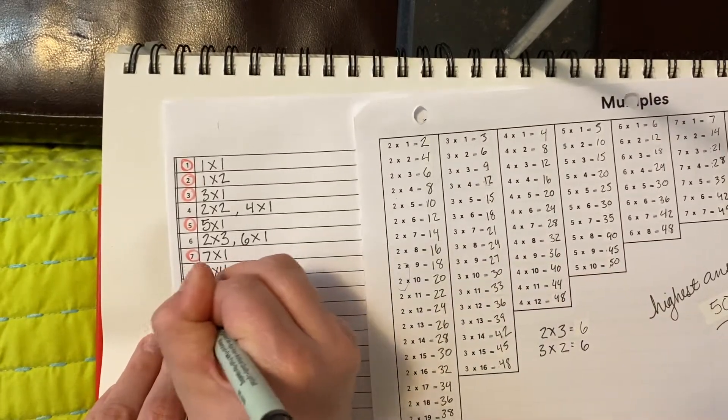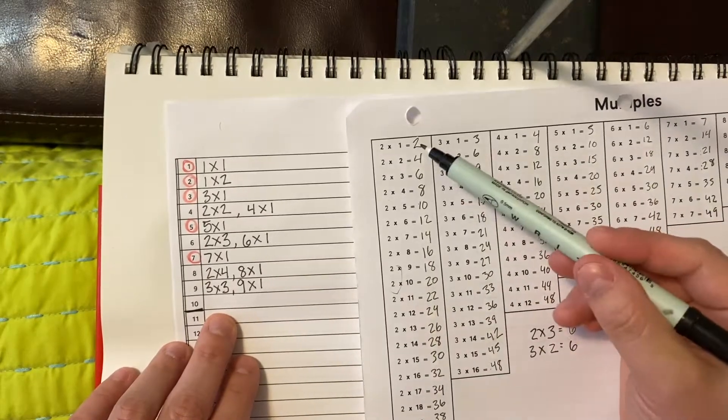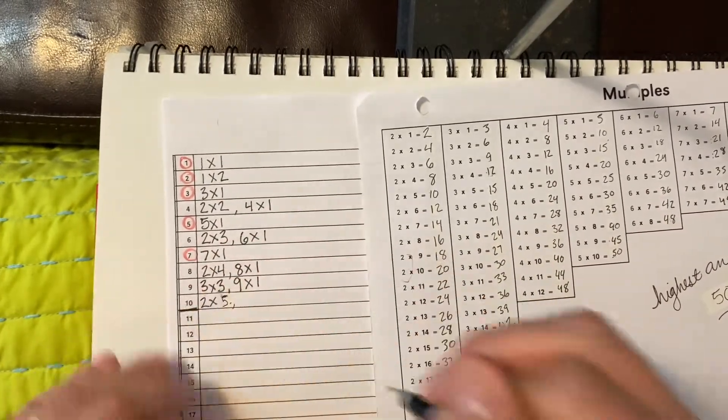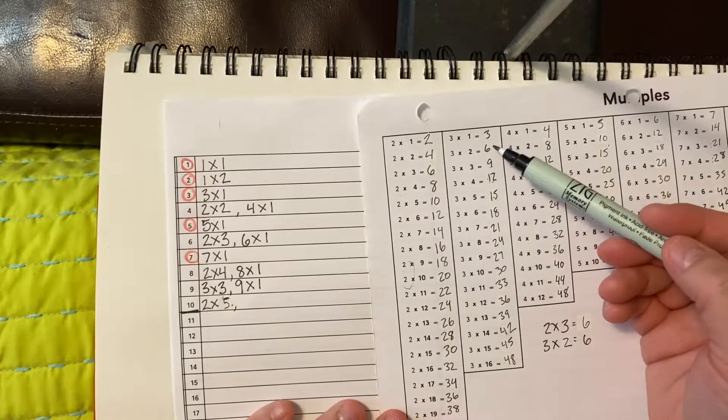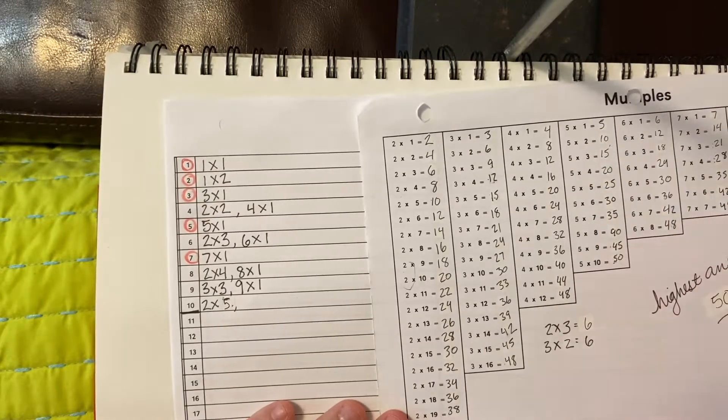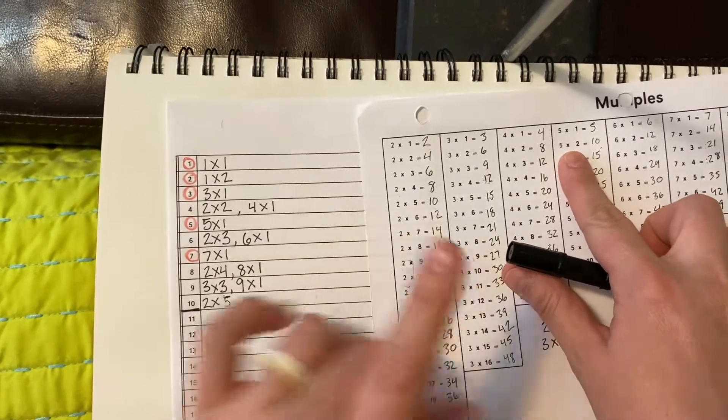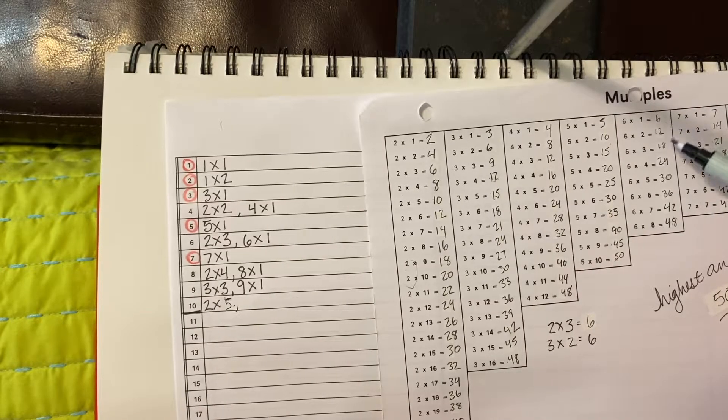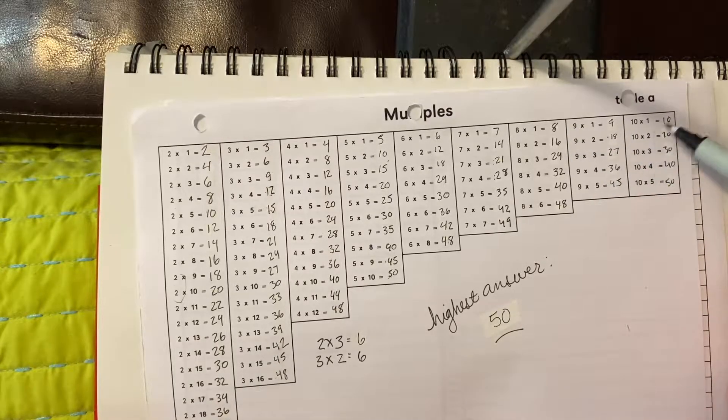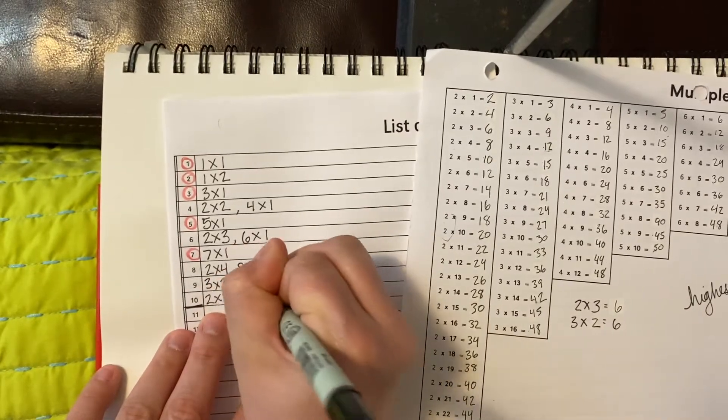The last one that we're going to do together is 10. Let's find the answers of 10. 2, 4, 6, 8, 10 - so 2 times 5. 3, 6, 9, 12 - no. 4, 8, 12 - no. 5, 10. Well, 2 times 5 and 5 times 2 is the same thing, remember? So I'm only going to keep that one that I already wrote down. 6, 12, 7, 14, 8, 16, 9, 18, 10 - there's a 10: 10 times 1.